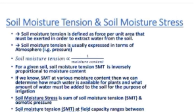The soil moisture tension values range from 1/10 atmosphere in sand to 1/3 atmosphere for clay. Soil moisture tension at field capacity is in this range.